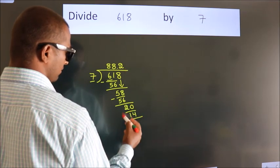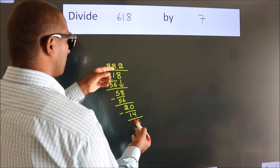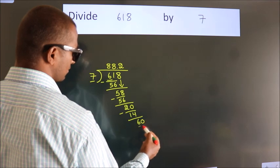Now we subtract. We get 6. After this, we already have the decimal. So directly take 0. So 60.